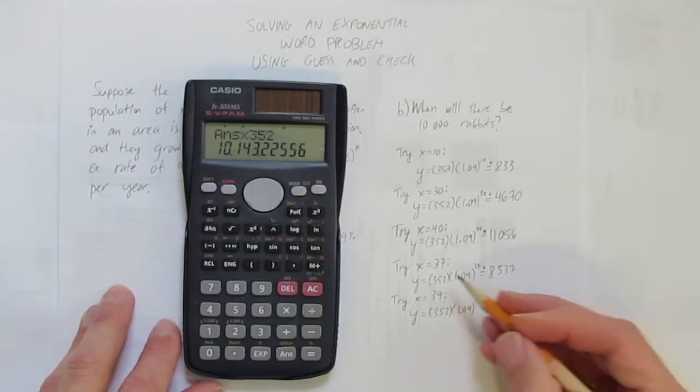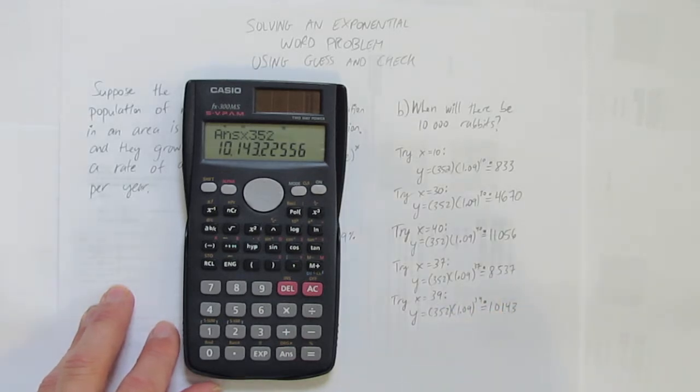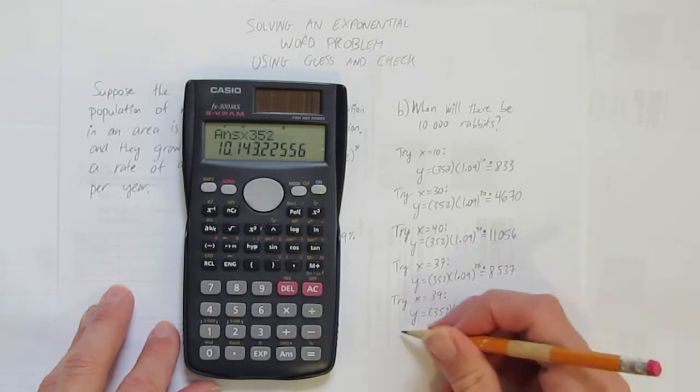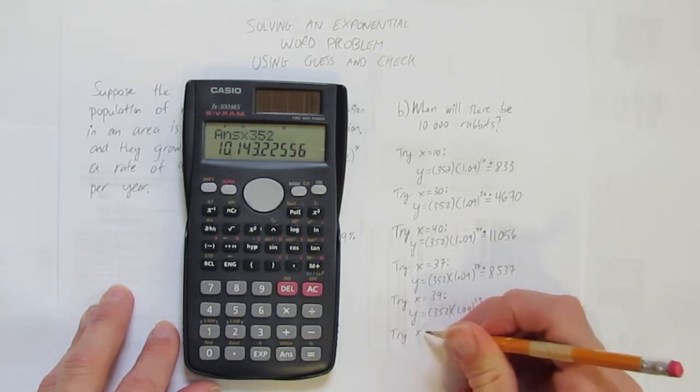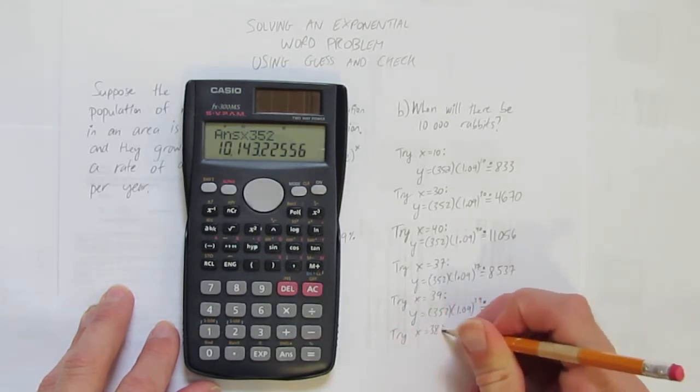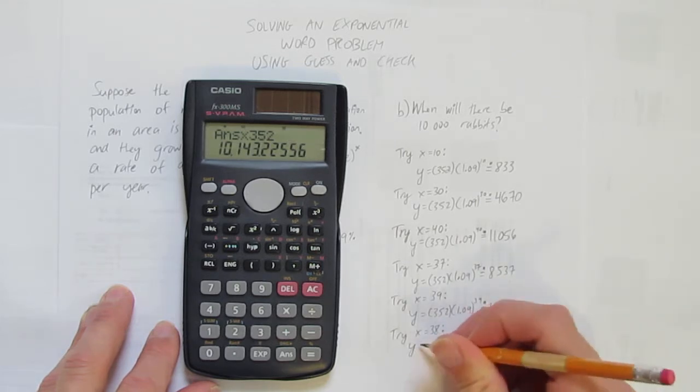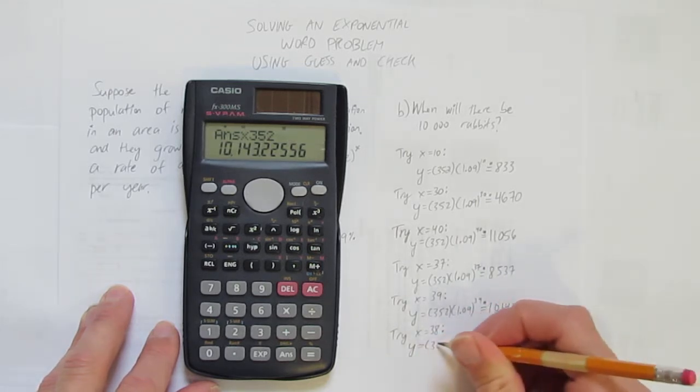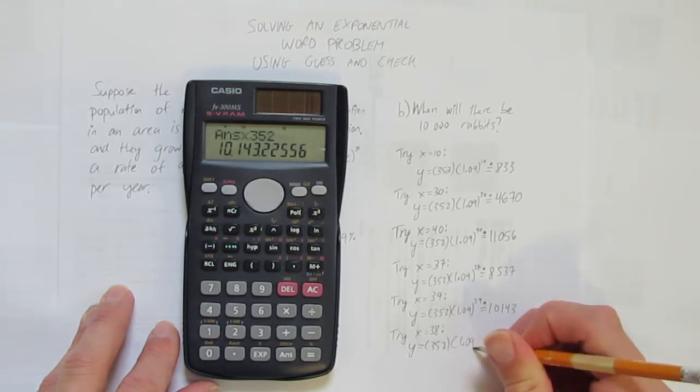So now I know it's between 37 and 39, but for full marks you've got to get one above, one below, the closest you can get. And I can still try X equals 38 and see, is that above or below 10,000? I don't know yet. Let's find out.